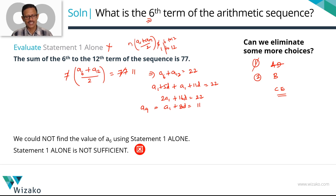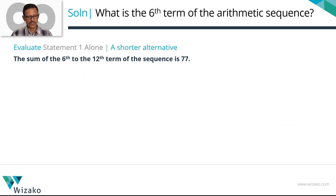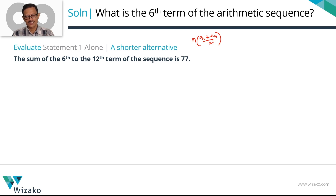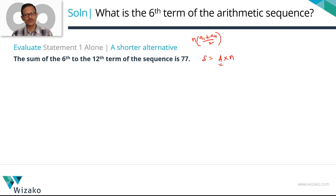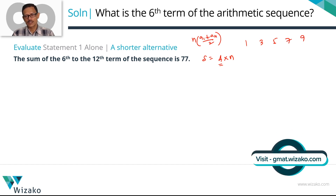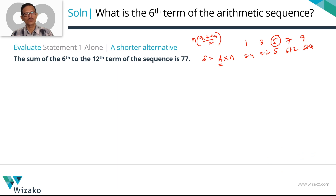Let me show a shorter alternative to reach a_9 = 11. The sum formula n·(a_1 + a_n)/2 essentially means: sum equals the average multiplied by number of terms. For an arithmetic progression, since terms are equally spaced, the middle term is the average. For example, the sequence 1, 3, 5, 7, 9 — anchored around the middle term 5, the deviations cancel, leaving 5 × 5 = 25 as the sum. So the average of an arithmetic progression is its middle term.